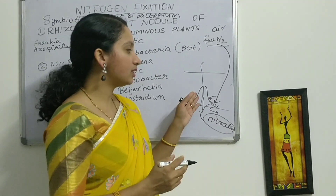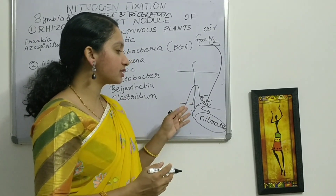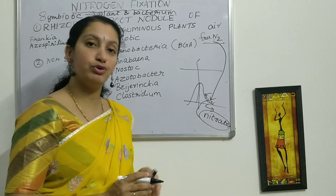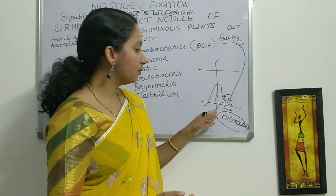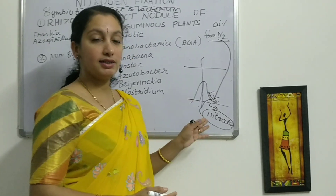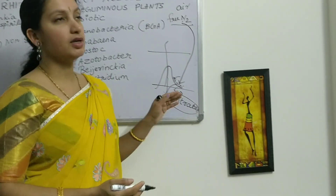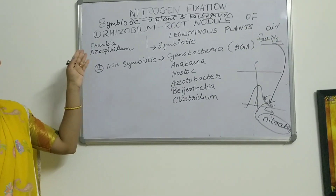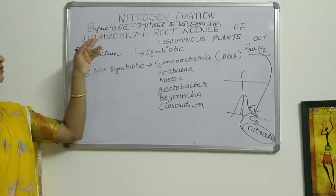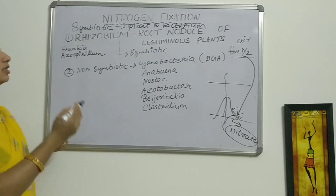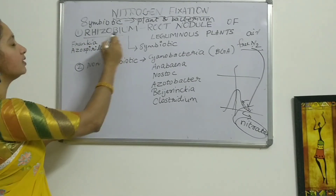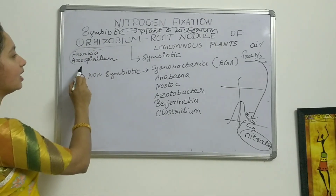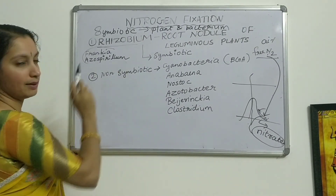In return, the benefit taken by Rhizobium from the plant is food — the plant provides food to the Rhizobium. There are some more bacteria that can do the same process as Rhizobium: those bacteria are Frankia and Azospirillum.